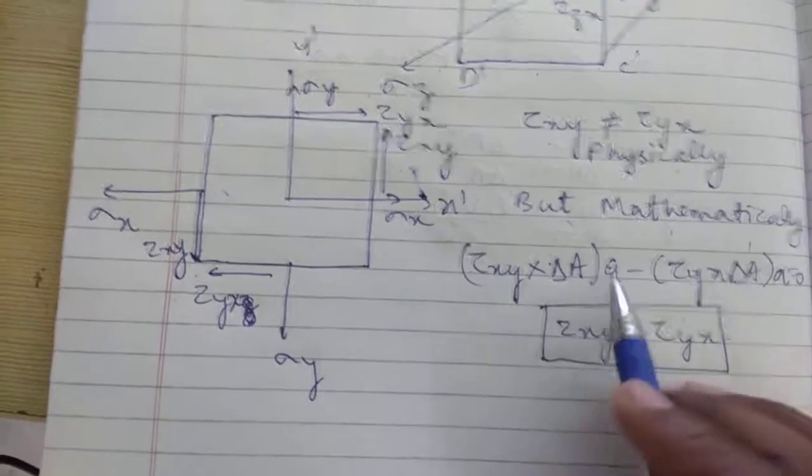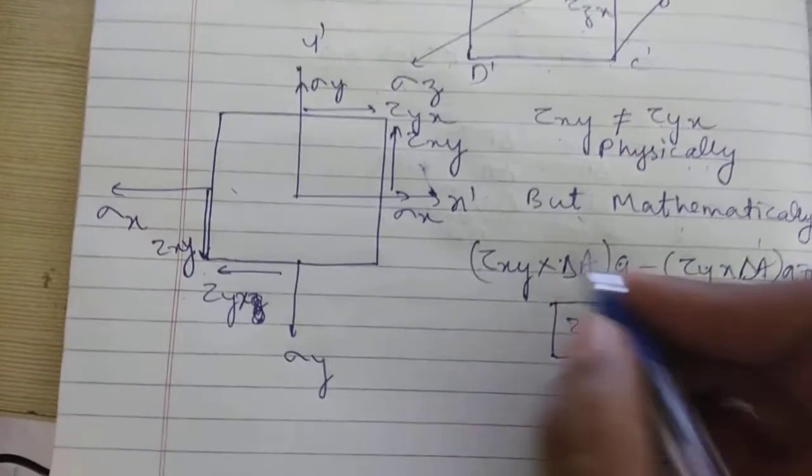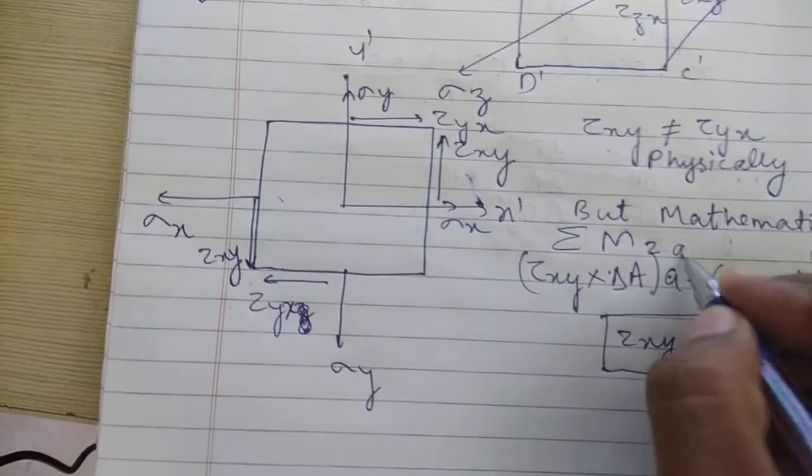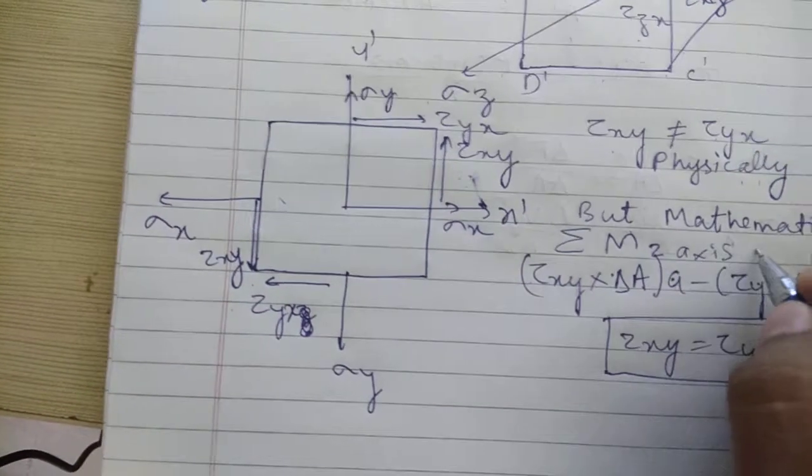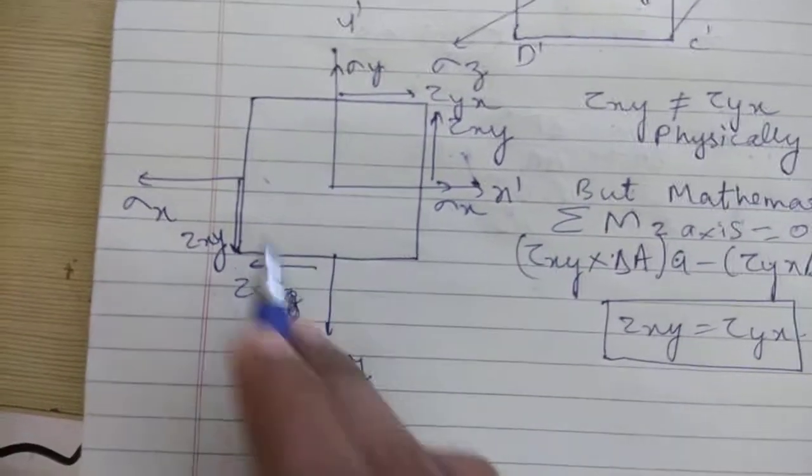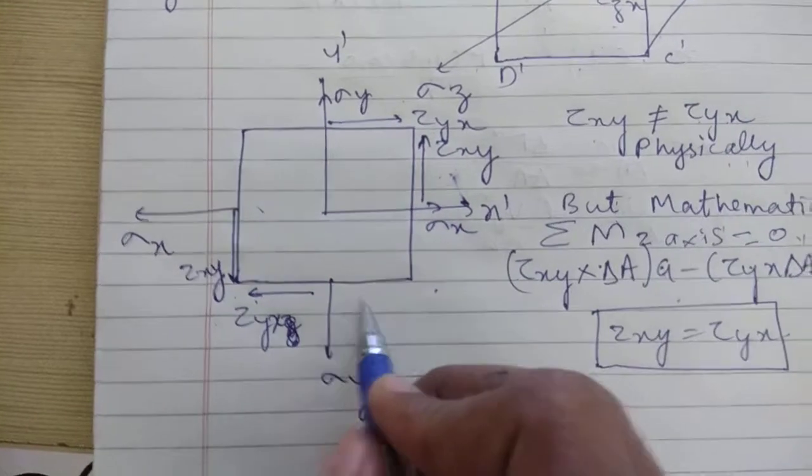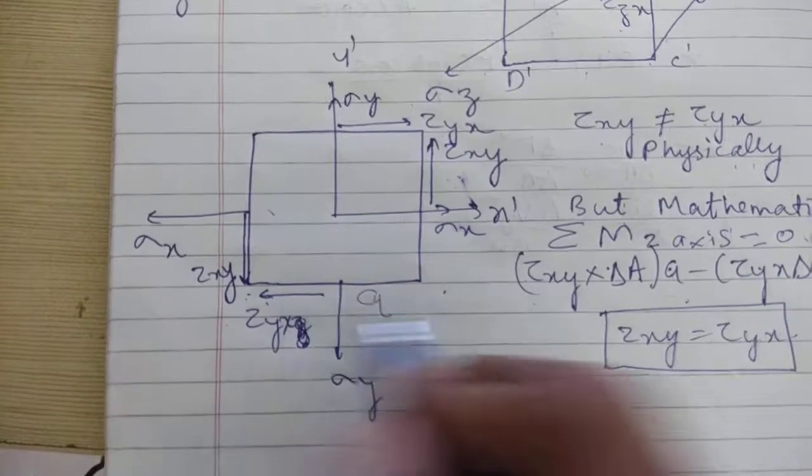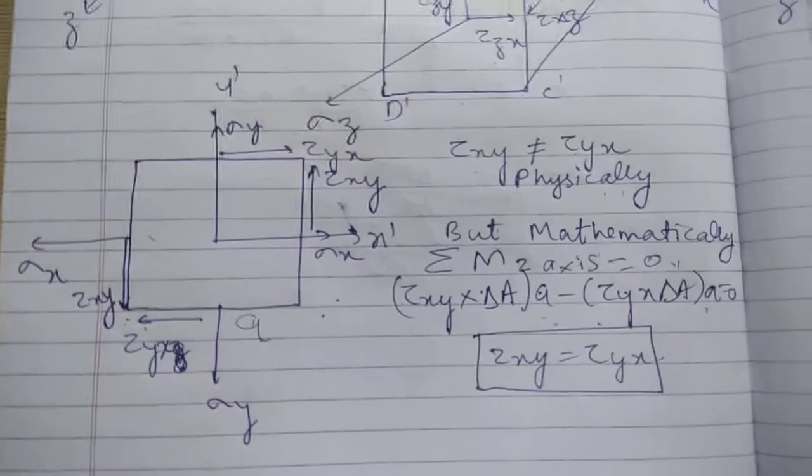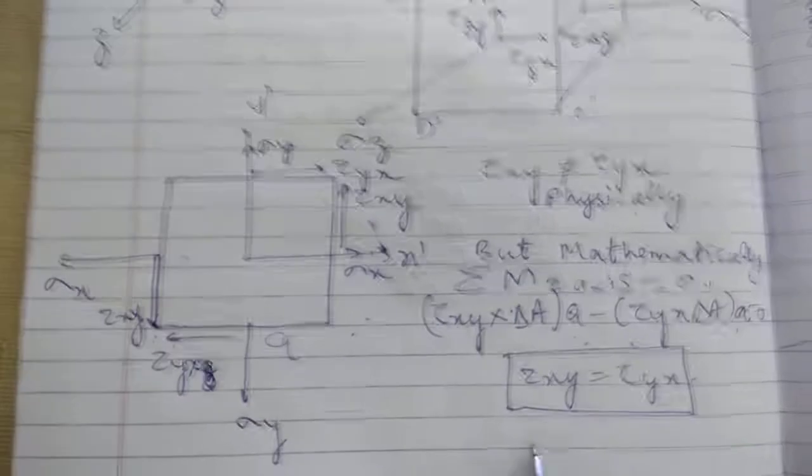We know that torque should be balanced about the z-axis. The torque is balanced, so we can write summation of M about z-axis equals zero. After that we get tau xy times delta a (the small area) times the length—suppose this total length beam is a times a—minus, because it is in opposite direction, tau yx times delta a times a equals zero.